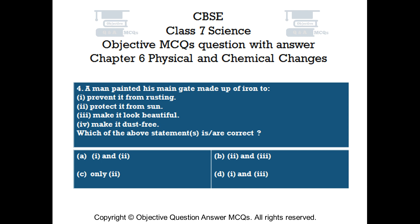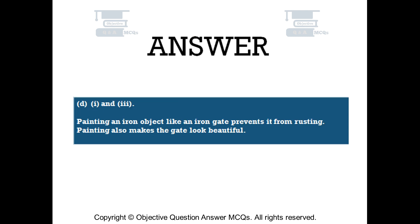Option A: 1 and 2. Option B: 2 and 3. Option C: Only 2. Option D: 1 and 3. The right answer is Option D: 1 and 3. Painting an iron object like an iron gate prevents it from rusting, and painting also makes the gate look beautiful.